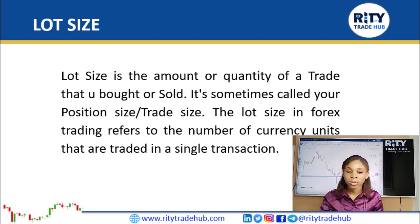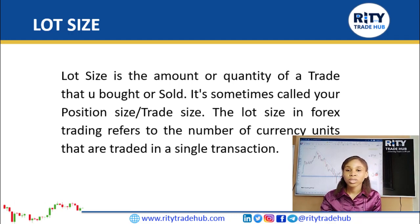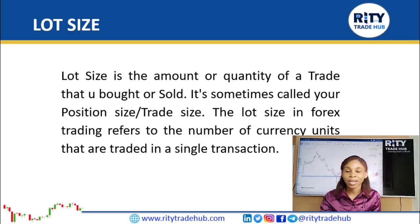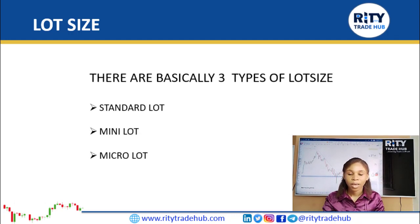For example, a trader with an account size of ten thousand dollars might trade a lot size of ten thousand base currency units, while a trader with an account size of one hundred thousand dollars might trade a lot size of one hundred thousand base currency units. In the currency market, currencies are not bought and sold singly — they are bought and sold in packs called lot sizes, which is what makes the gain appreciable.